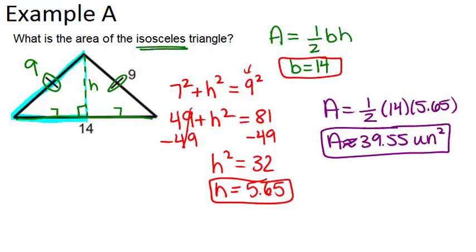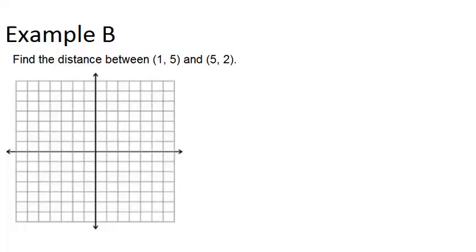Alright, let's look at example B. Find the distance between (1, 5) and (5, 2). So remember the distance formula is really just the Pythagorean Theorem in disguise. So instead of even thinking of the distance formula, let's try to just use the Pythagorean Theorem.